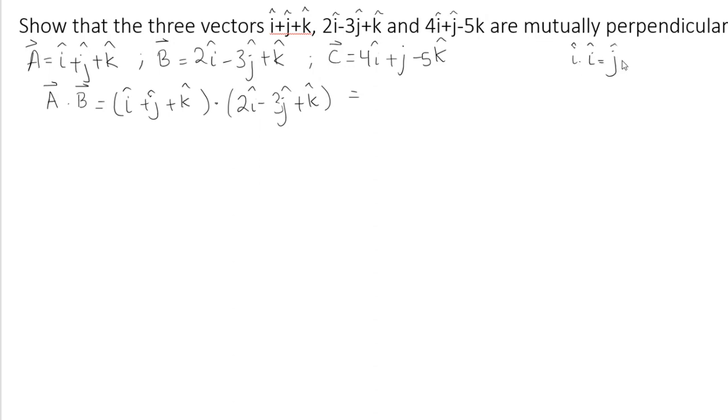On the other hand, i·j, j·k, and k·i, they are equal to zero. Or j·i, k·j, or i·k, they are equal to zero too.